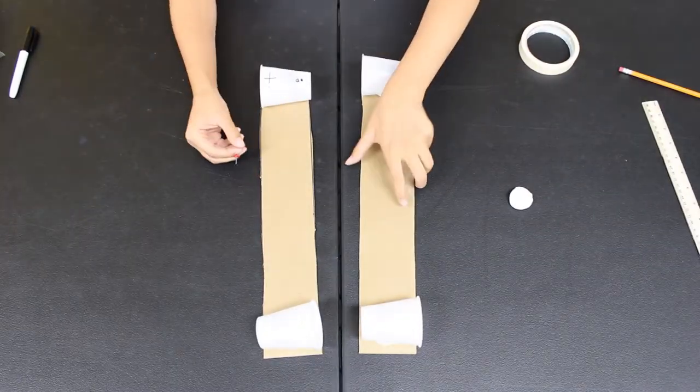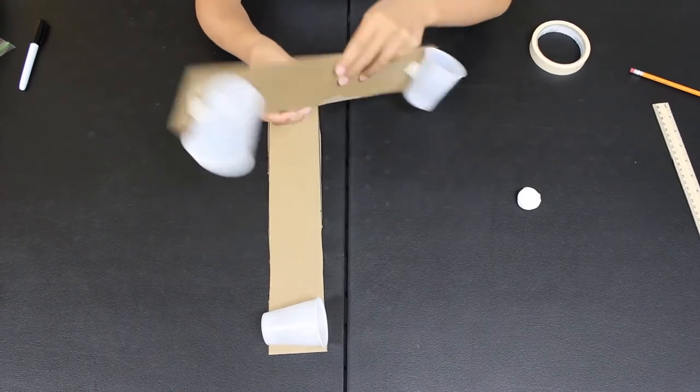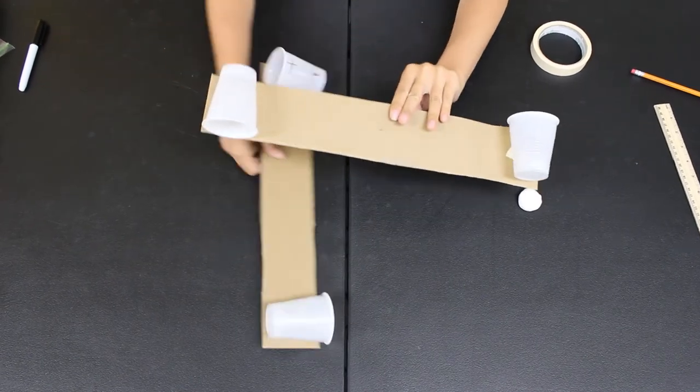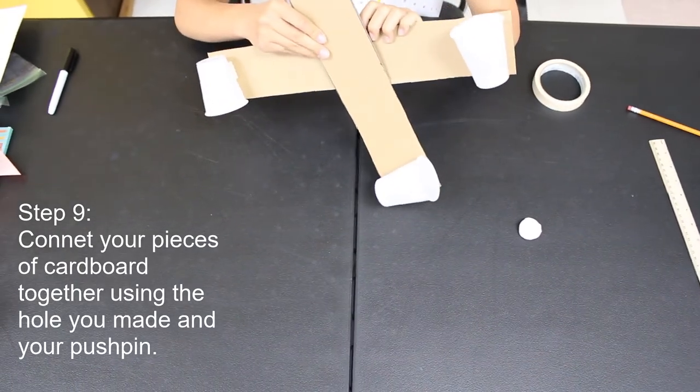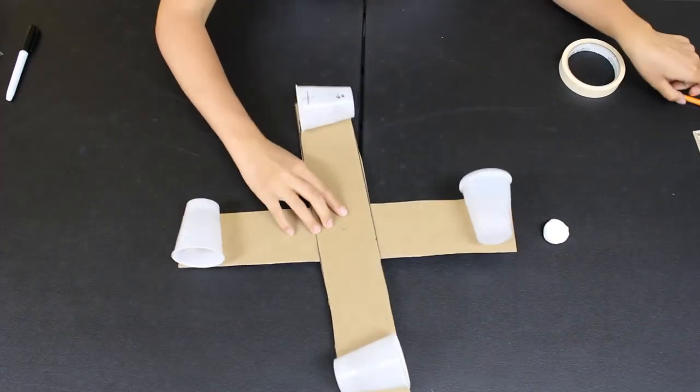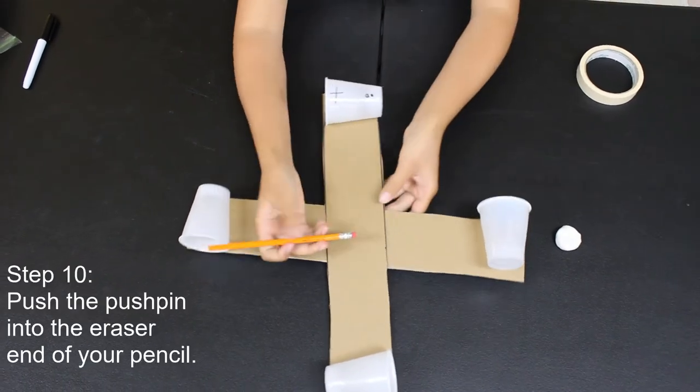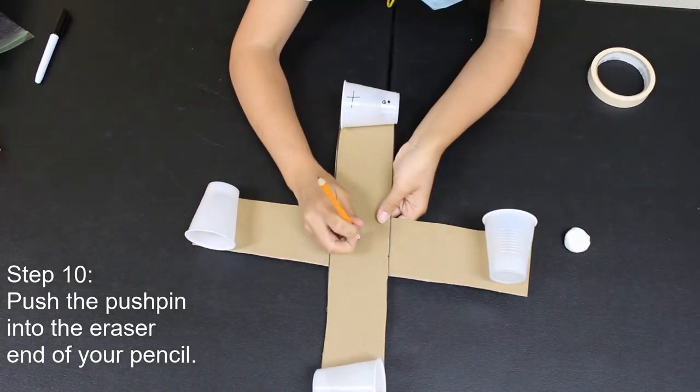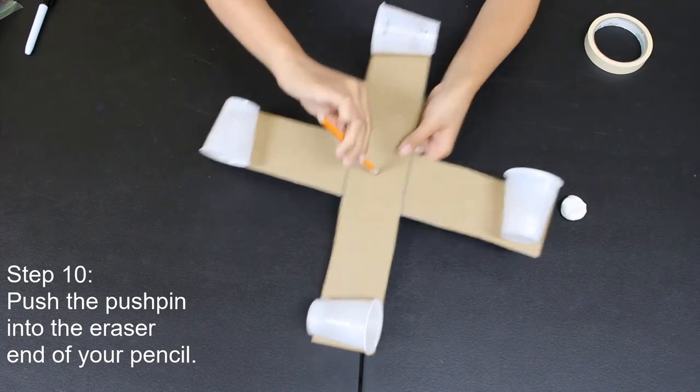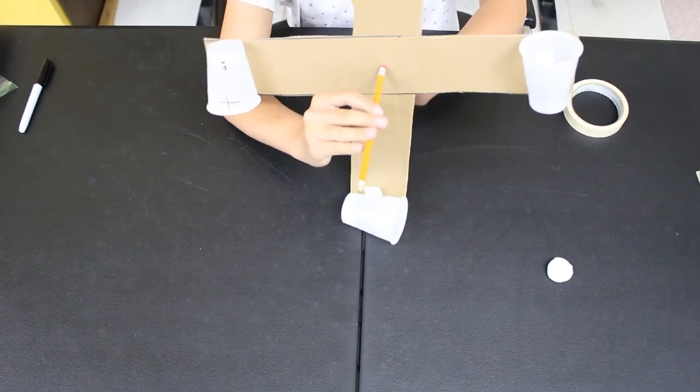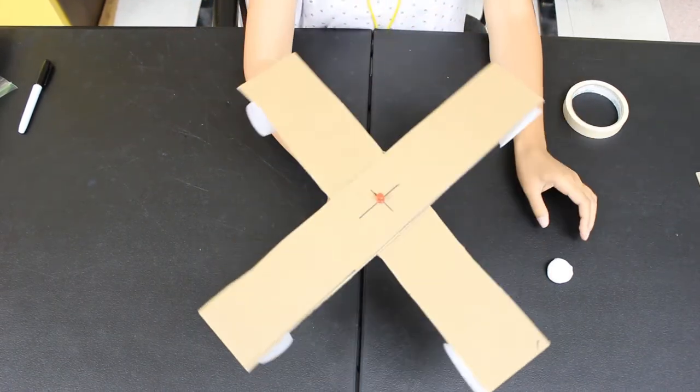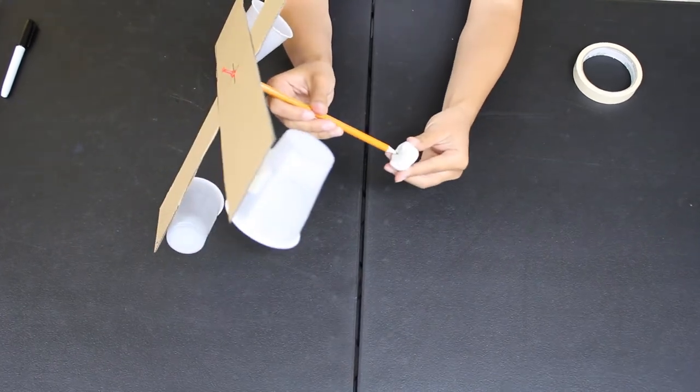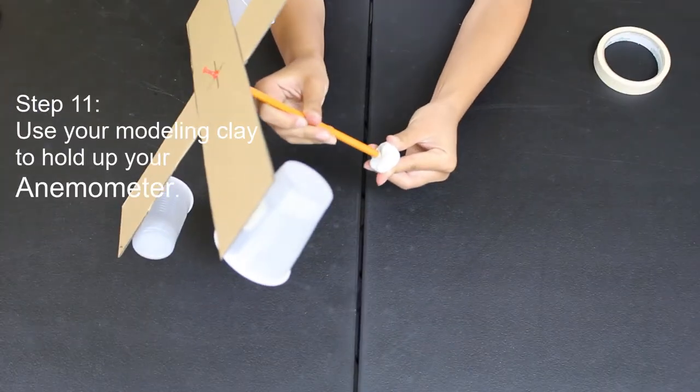Take your two pieces of cardboard with the cups taped at the end and push the pushpin through the middle of both pieces so they're connected. Then take your pencil and push that pushpin through the eraser—gently, don't stab it. Now that you have the cardboard connected to the pencil, stick your pencil into that lump of modeling clay.